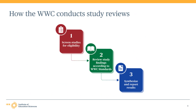After the WWC conducts its literature search, it then follows a three-phase process to conduct study reviews. The first phase is screening studies for eligibility, where WWC reviewers assess whether the studies identified in the literature search meet the eligibility criteria specified in the study review protocol and, when applicable, the topic area synthesis protocol. The second phase is reviewing study findings according to the WWC standards, where reviewers assess whether eligible studies have findings that meet WWC standards. In the third and final phase, the WWC synthesizes and reports on findings from those studies that do meet standards.